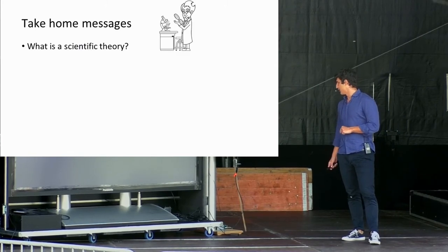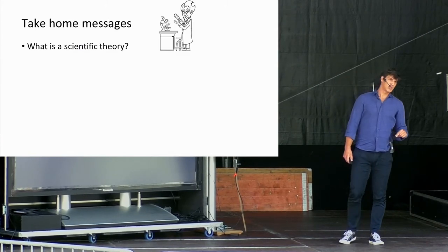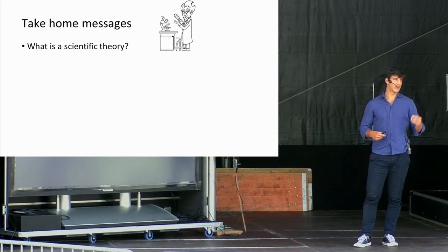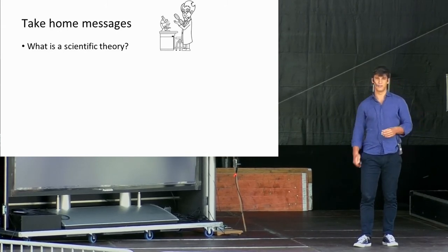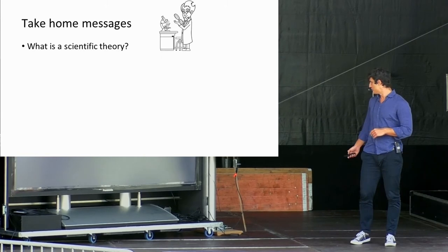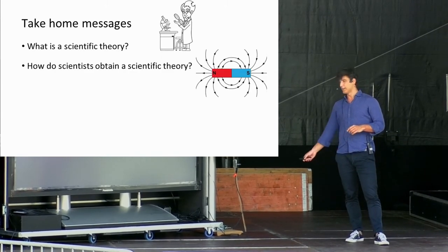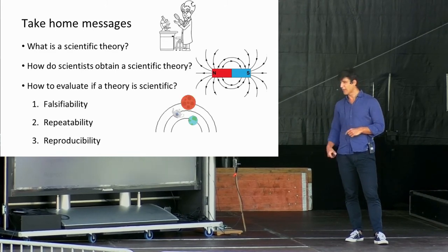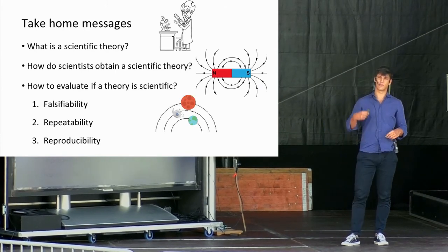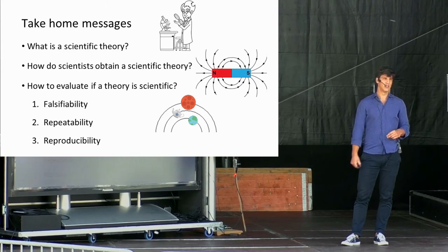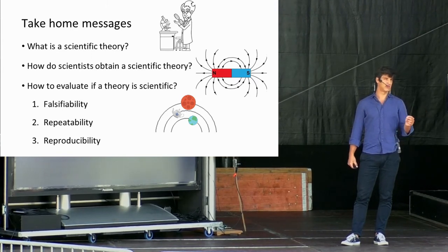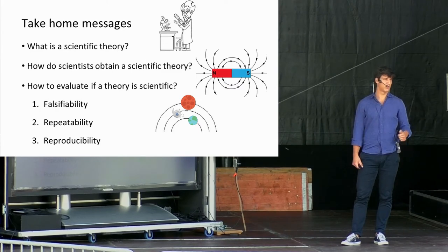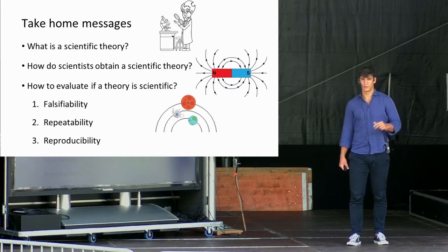Here, I come to an end. Today, I showed you what a scientific theory is and how common language and scientific language may differ. I showed you how scientists get to a scientific theory using the scientific method. Finally, I hope I demonstrated that there are a few instruments that might allow us to evaluate whether a theory is scientific or non-scientific. And this would be whether a theory is falsifiable, repeatable, and reproducible. Thank you very much.